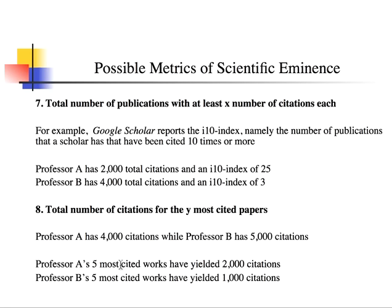For example, Professor A has 4,000 citations in total while Professor B has 5,000. But looking at their respective five most cited works: Professor A's five most cited have yielded 2,000 citations — meaning those five works constitute 50% of his total citations — whereas Professor B's five most cited correspond to only 20% of his total citations. This is a quick way to measure how influential your biggest home runs have been.